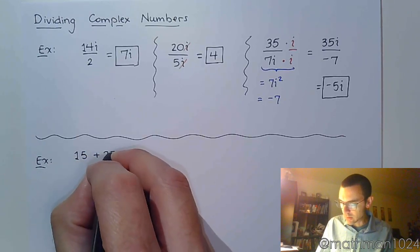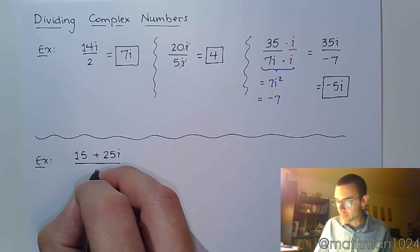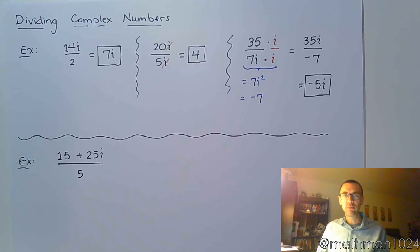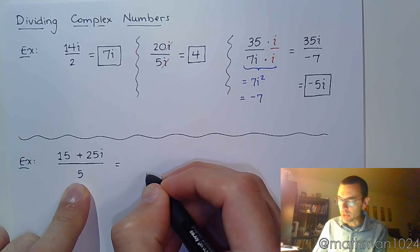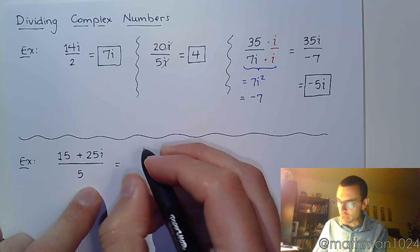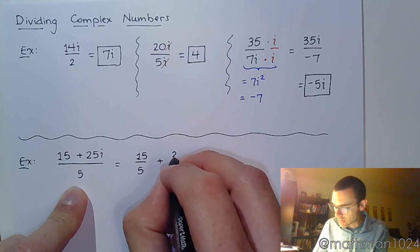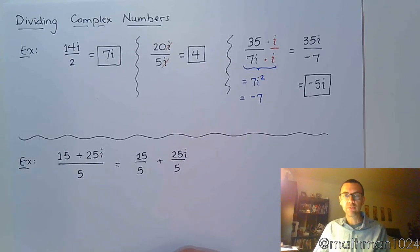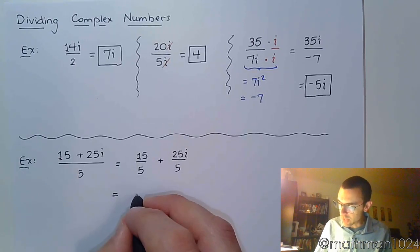If I take 15 plus 25i all divided by 5. One of the properties that we have with fractions is that we can separate into smaller pieces as long as my denominator is just a single term, which this guy is. So, this is my denominator for both of the pieces in the numerator. So, we separate this so that we understand this is 15 over 5 plus 25i over 5.